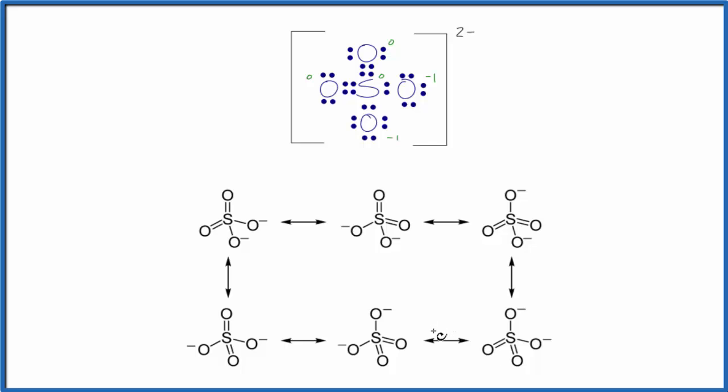The important thing to realize is these six different ways don't represent the ions switching back and forth between different structures. What it means is that these six will be averaged to form one structure. And that'll be what we find in the lab. That'll be how the electrons are delocalized across the ion.